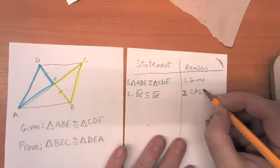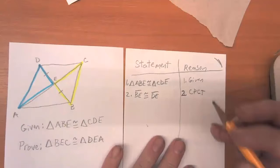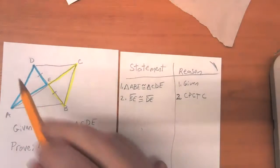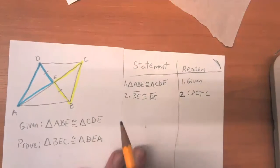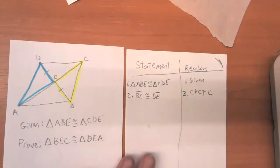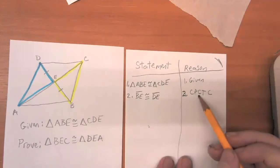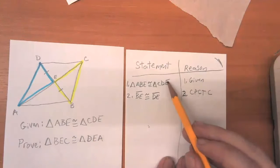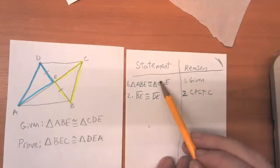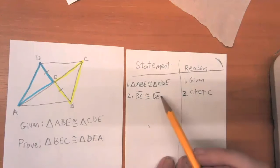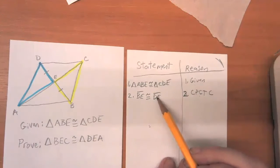So therefore, I can say that BE is congruent to DE. My reason for that is because I'm taking advantage of knowing that these two triangles are congruent, so I can say that these two sides are corresponding parts. I didn't use this to prove that the triangles are congruent — I used the fact that these two triangles are congruent to prove by CPCTC that these two sides must be congruent.